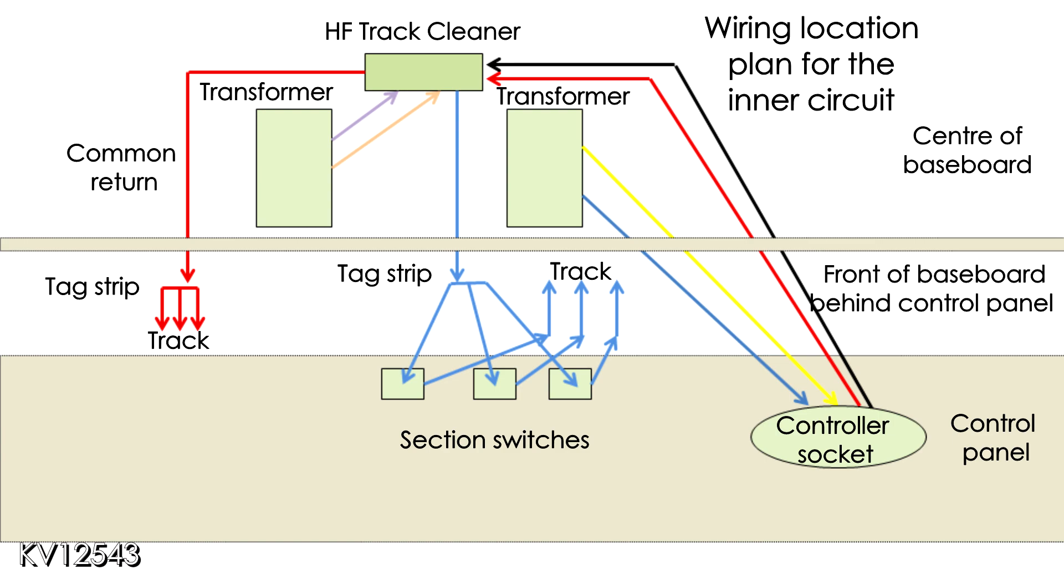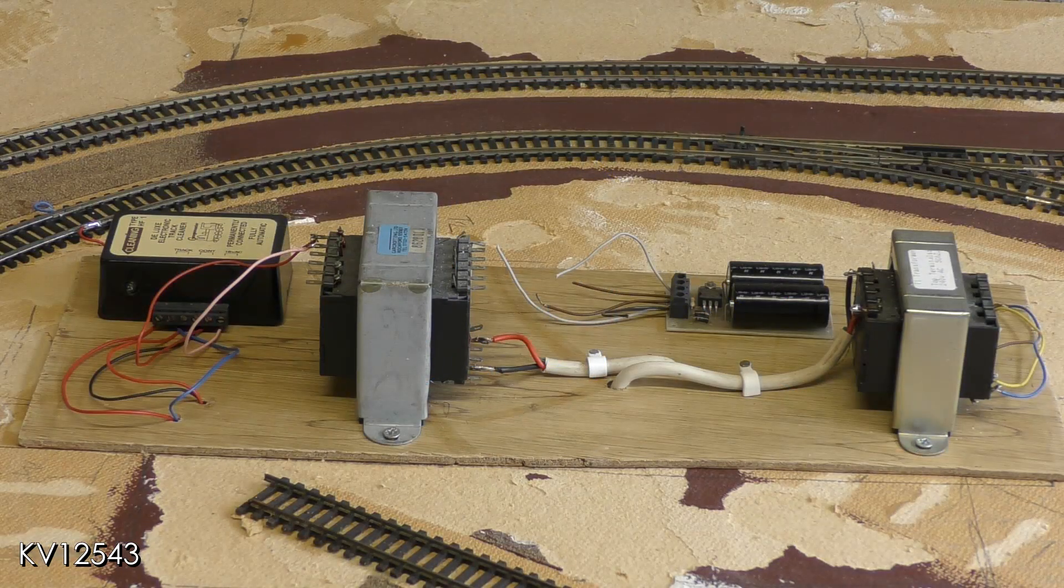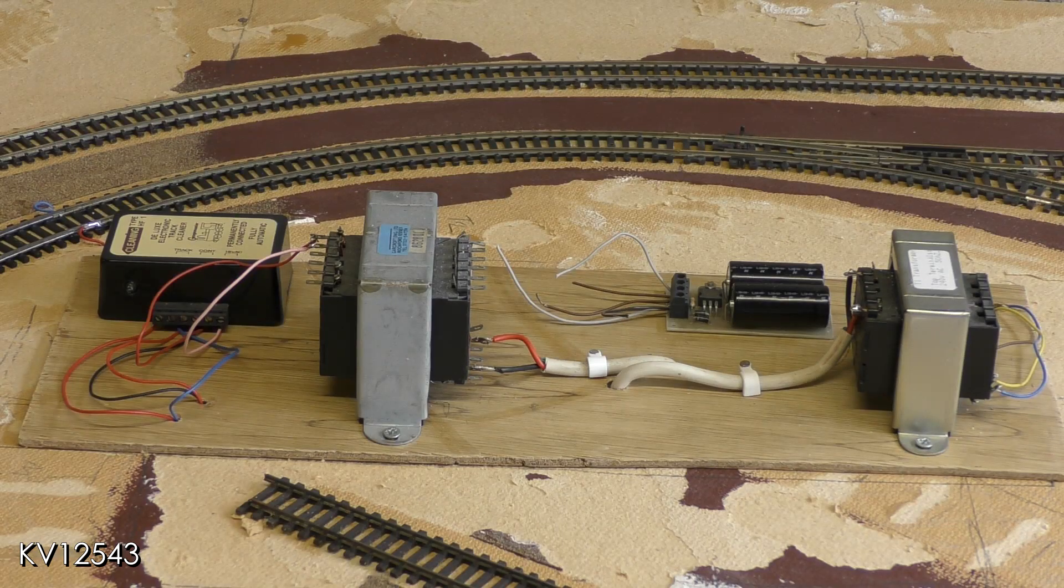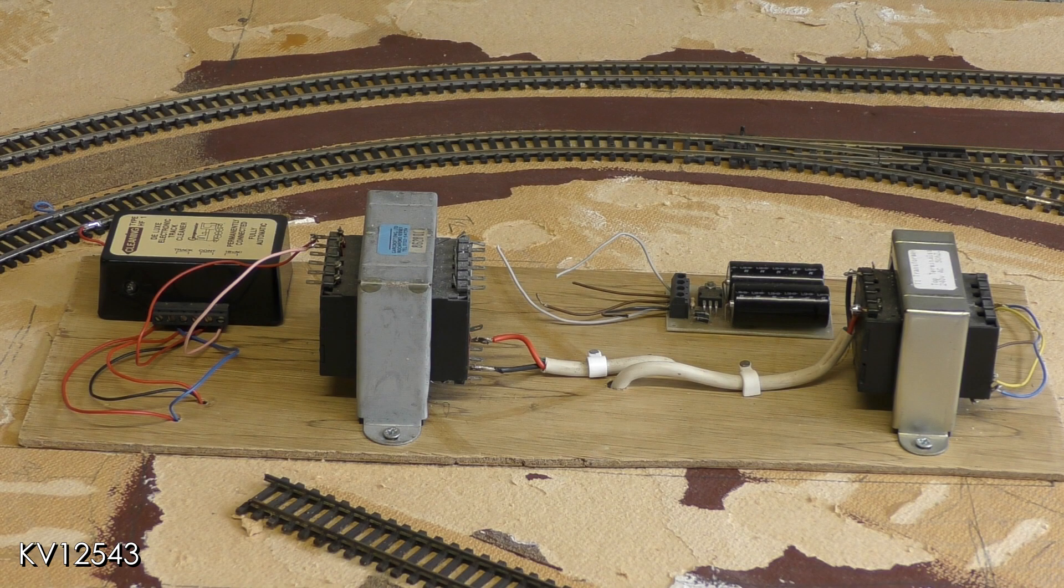This all sounds a bit convoluted and it probably is, but most of the wires are either on the control panel or just behind it so are easily get-at-able. Looking at the layout itself, space considerations have dictated that the transformers, CDU, and HF track cleaner should all be located in the center of the layout.